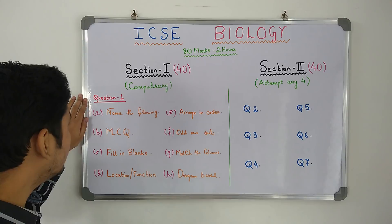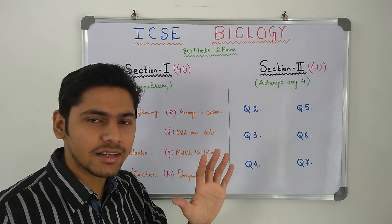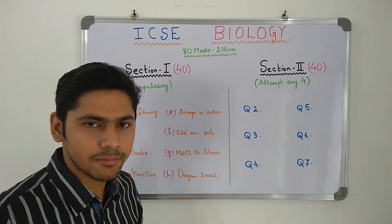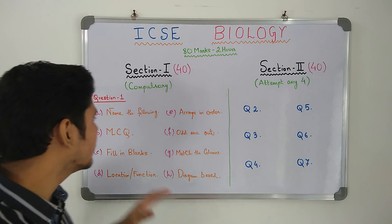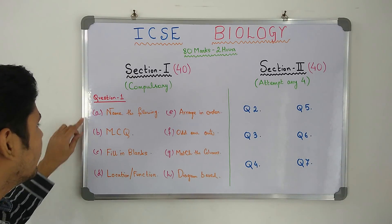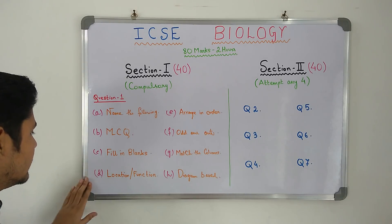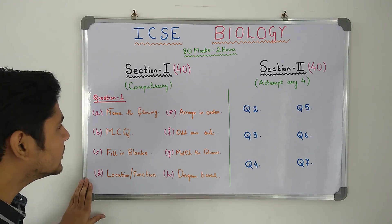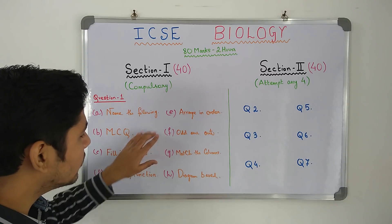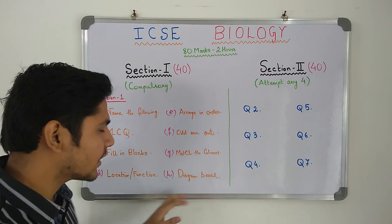You will get one question with 8 sub-parts of 5 marks each to give you 40 marks. The types of questions include: name the following, multiple choice questions, fill in the blanks, state the location and function, arrange in order, odd one out, match the column, and a diagram-based question.